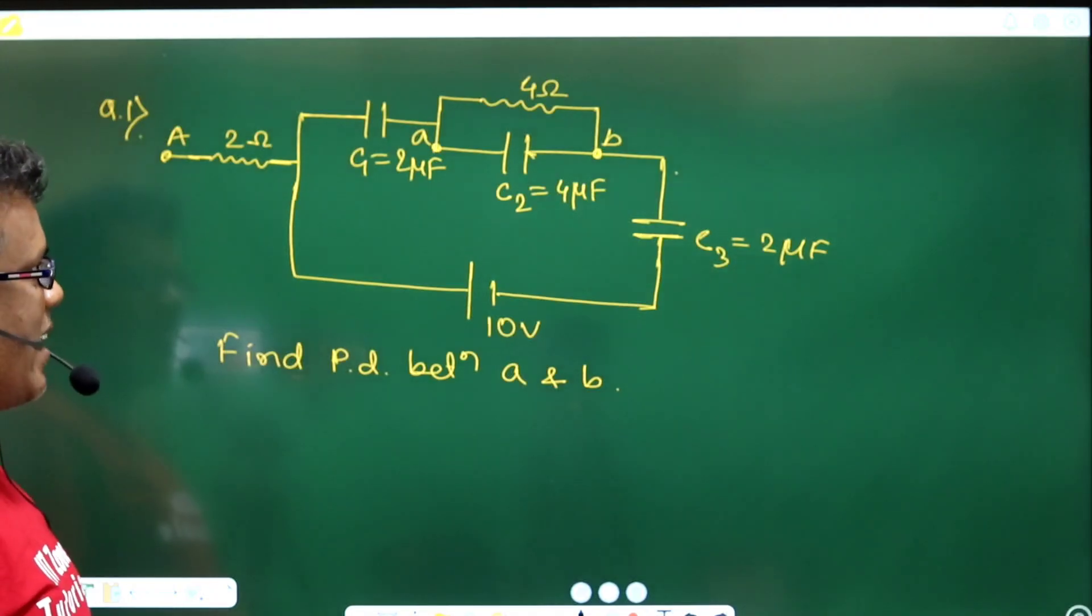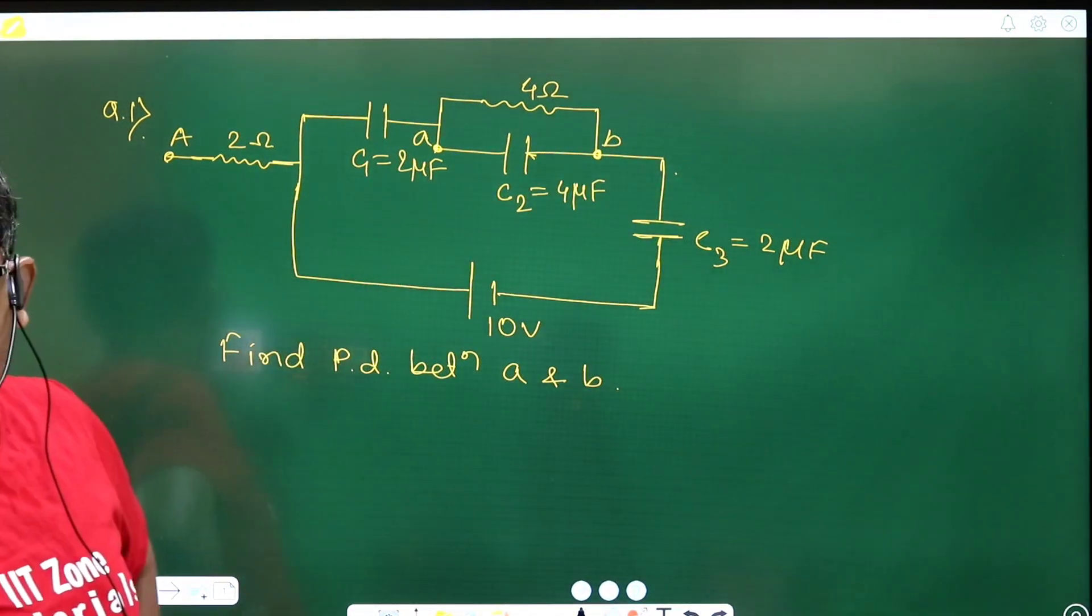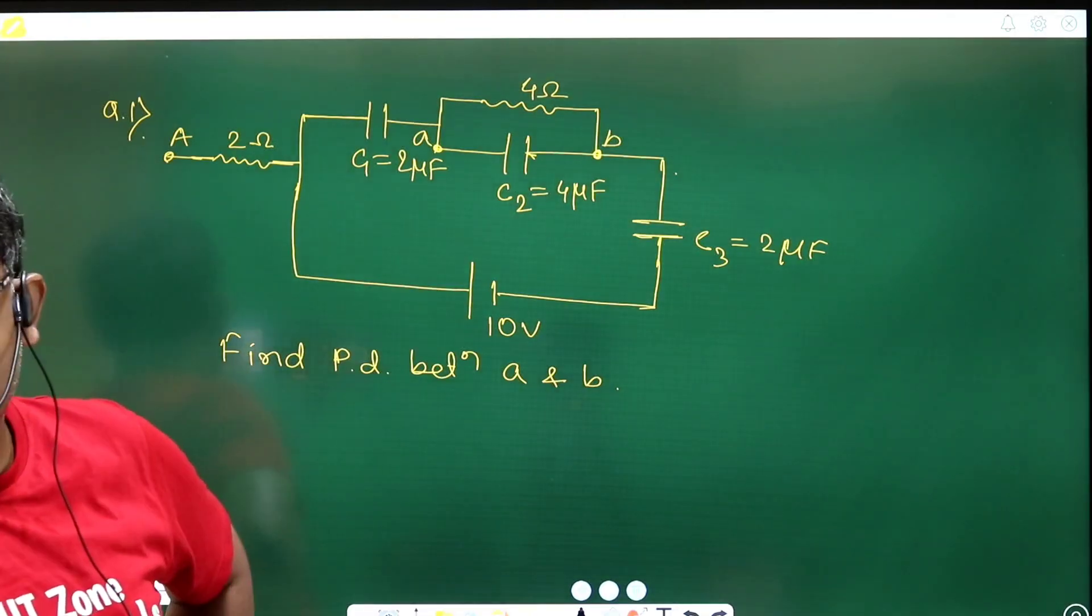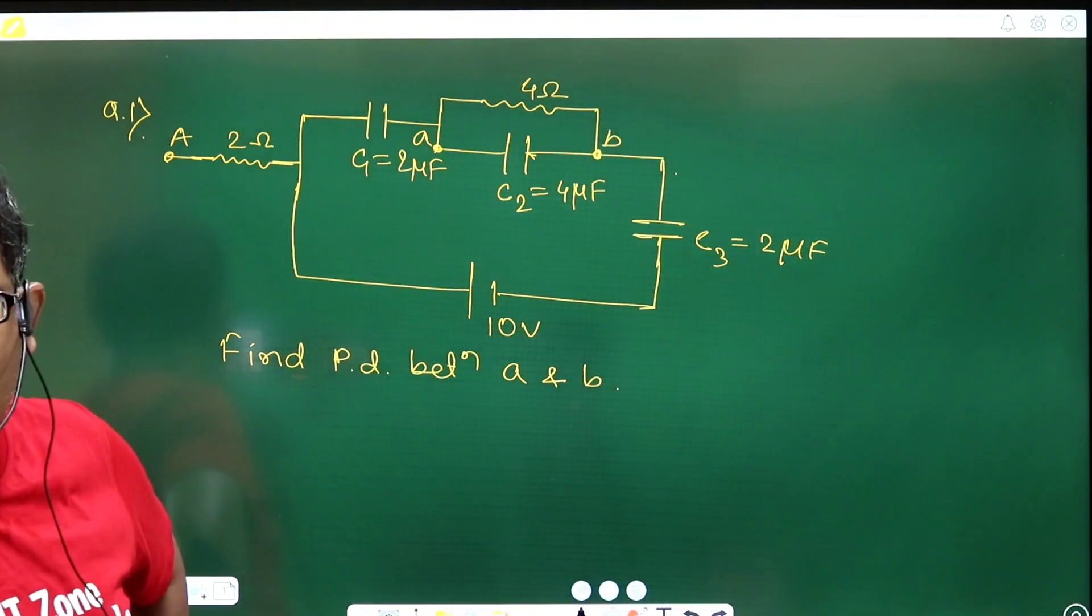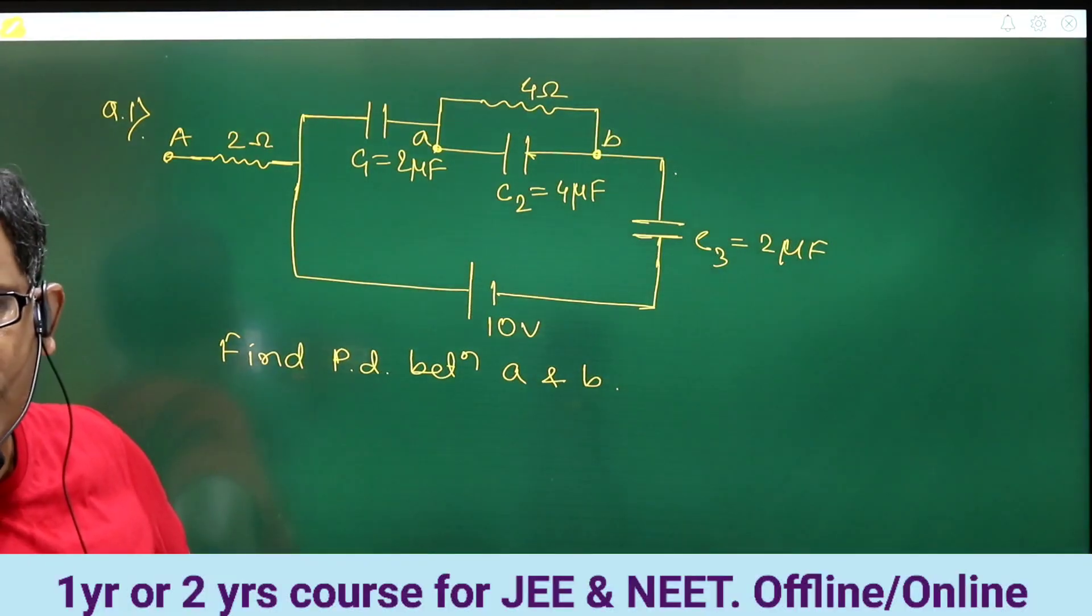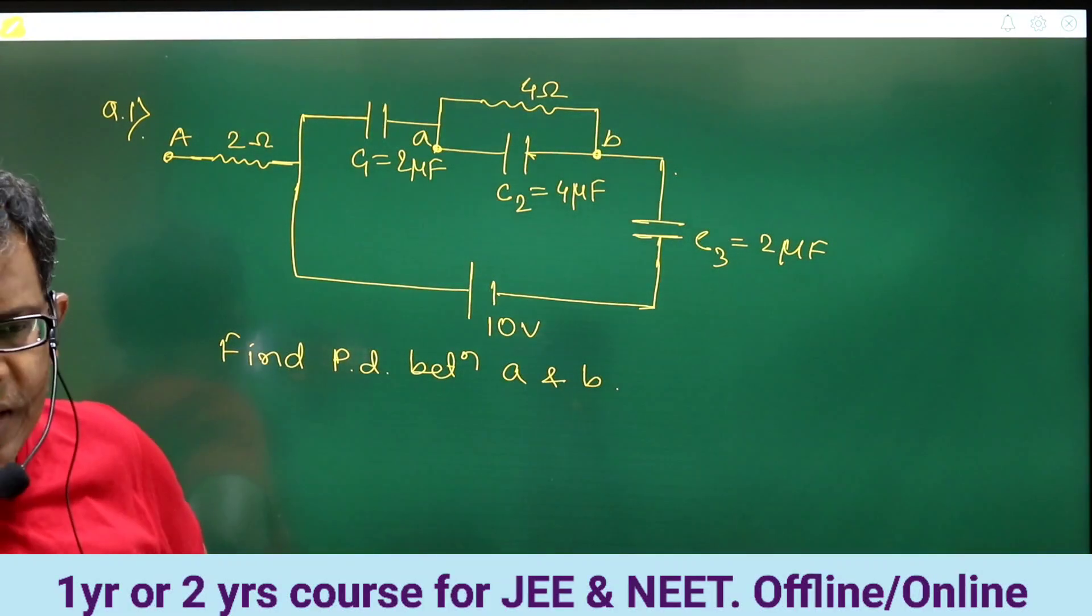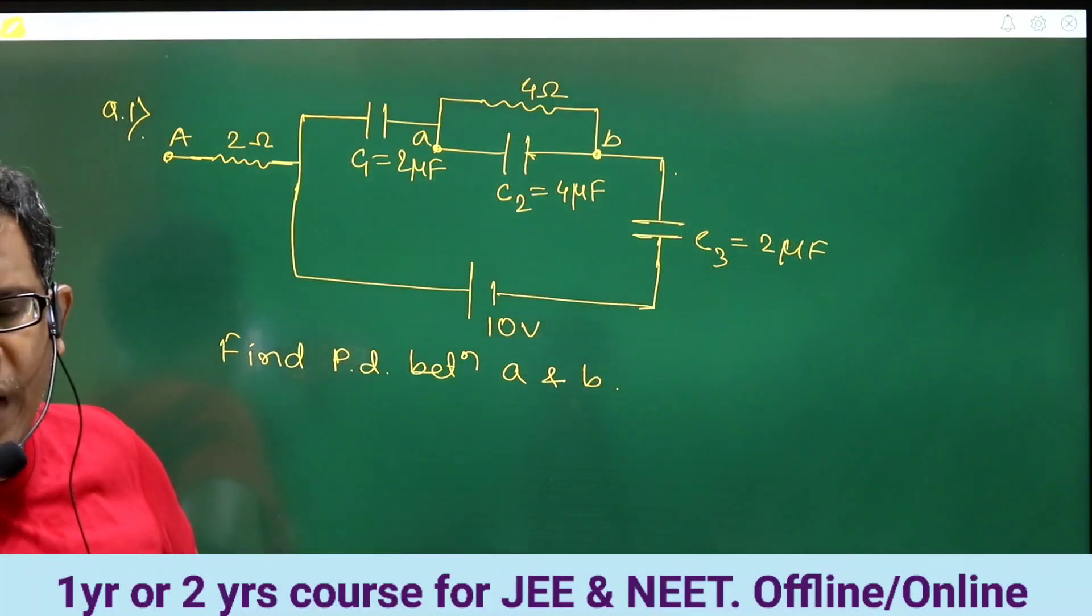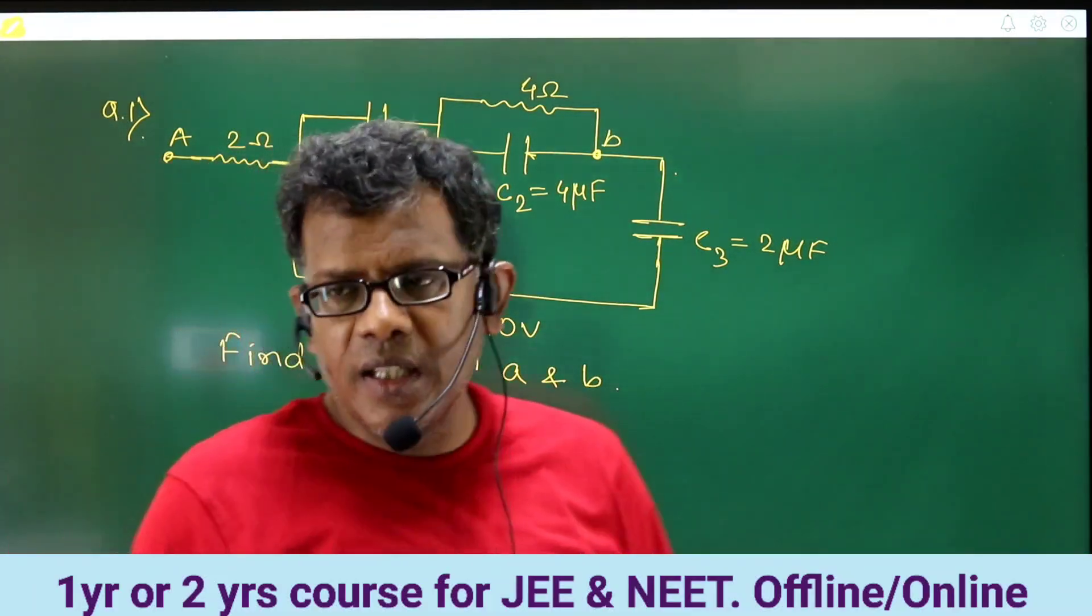Because we know that at steady state, whatever the charge drawn from C1, that will block the flow of charge further. So if there is no further flow of charge, means there is no state of current. So can that mean no current can flow through the 4 ohm resistance? No PD can be recorded across 4 ohm resistance.